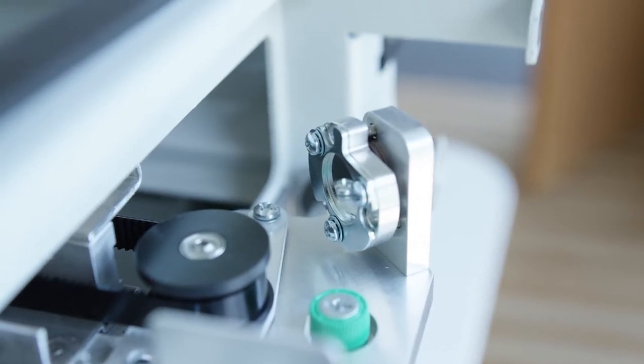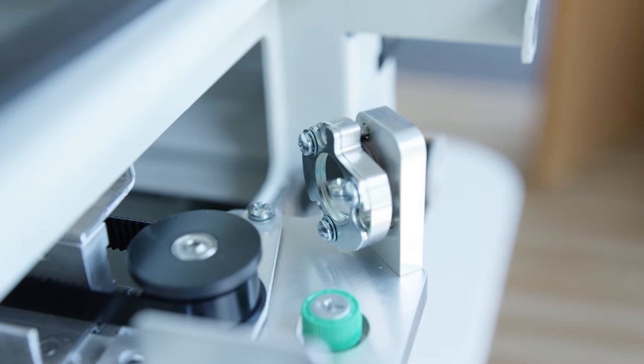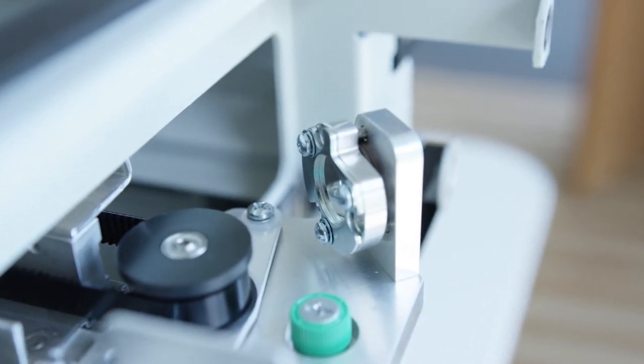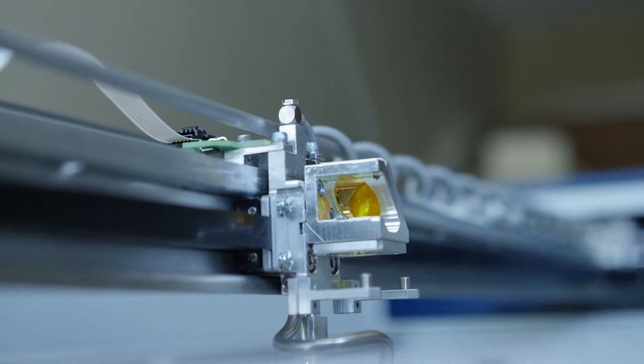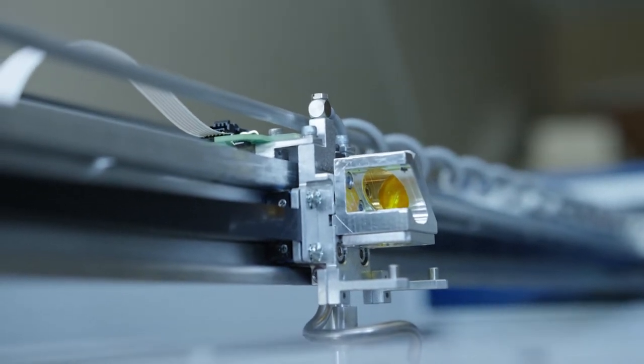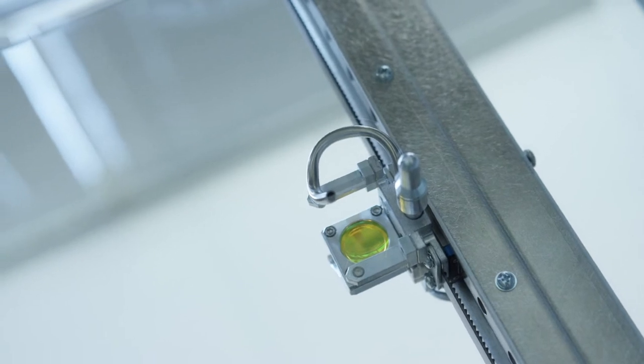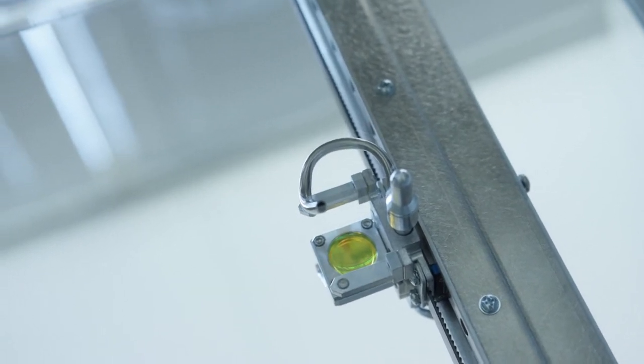The beam then travels to the end of the X-axis assembly where a third mirror directs it down the X-axis of the machine. Finally, a fourth mirror directs the beam down toward the work area through a main lens, which focuses the beam for cutting and engraving.